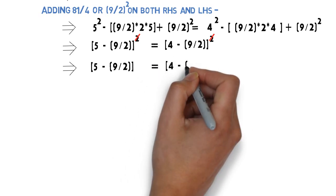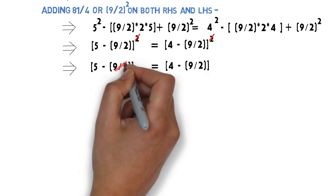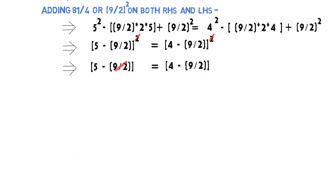Once this is done, I have minus 9 by 2 on the right hand side and left hand side. I can cancel both 9 by 2, and I will be left with 5 is equal to 4.